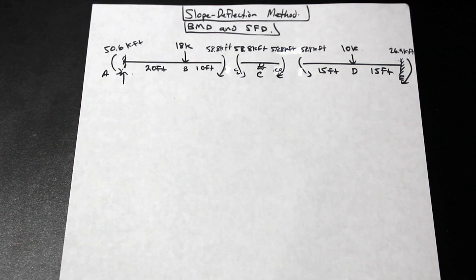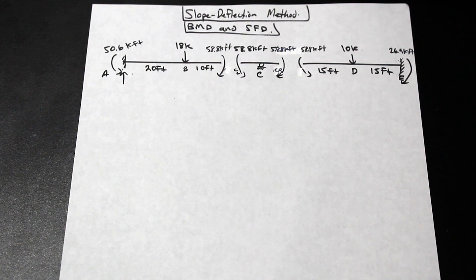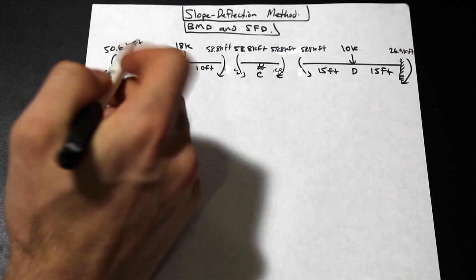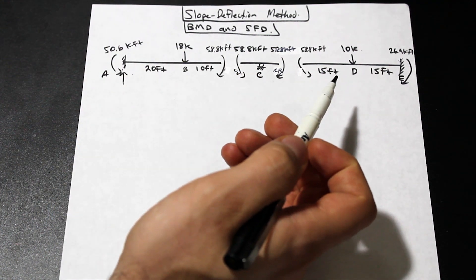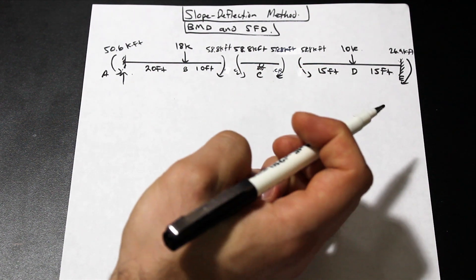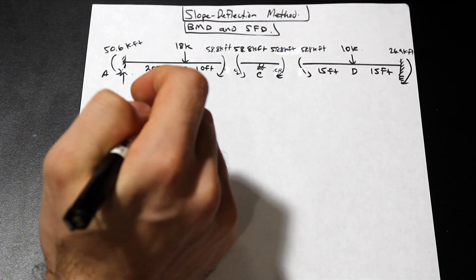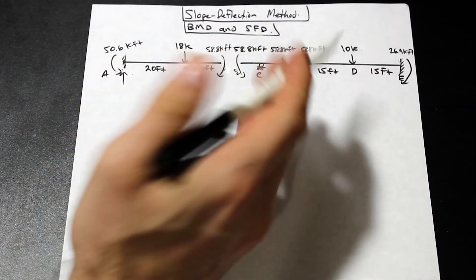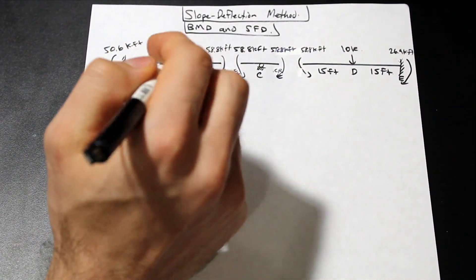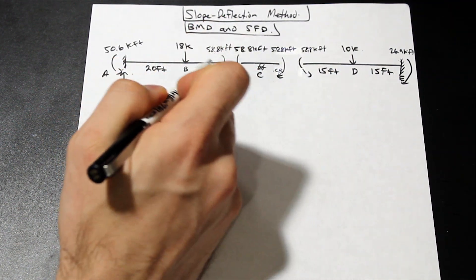Hey guys, welcome back — Fred here from AF Math and Engineering. This video is the second part of the slope deflection method where we solve for a continuous beam with two fixed ends and a roller at point C. We solved for the end moments in Part 1, and now we're going to solve for the reactions and draw the shear and bending moment diagram.